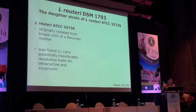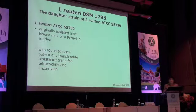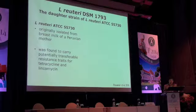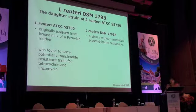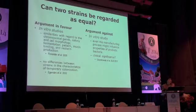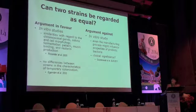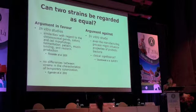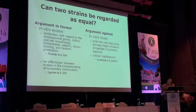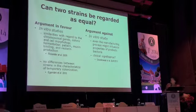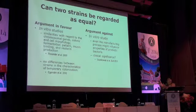DSM 17938 is a daughter strain of another probiotic, Lactobacillus reuteri ATCC 55730. It was originally isolated from breast milk of a Peruvian mother, but was found to carry potentially transferable resistance traits for tetracycline and lincomycin. This was potentially dangerous, so this strain was replaced by the daughter strain without the unwanted plasmid-borne resistance. There is debate about whether two strains can be regarded as equal. In vitro studies show similarities in chromosomal genes, colony and cell morphology, fermentation pattern, mucin binding, and reuterin production.